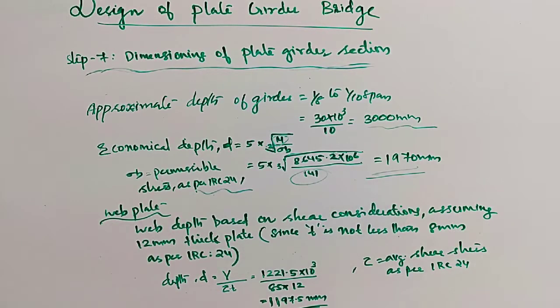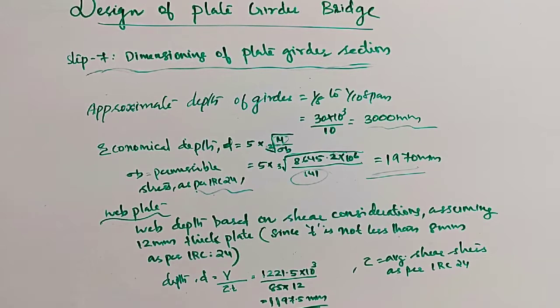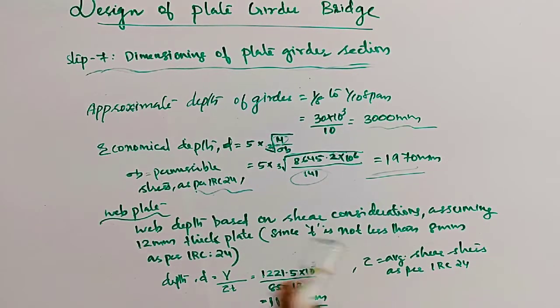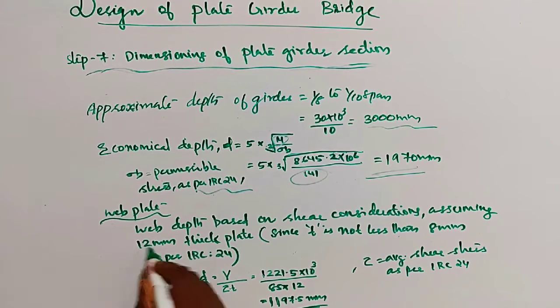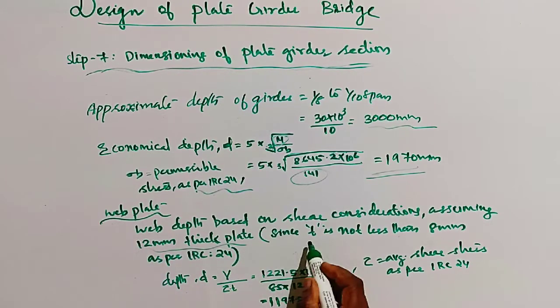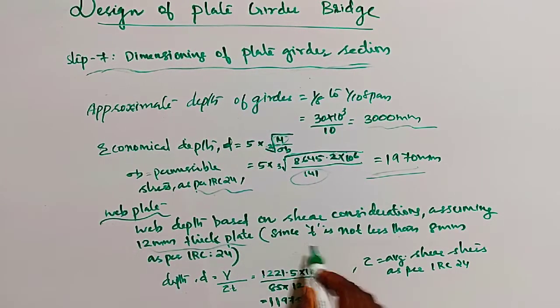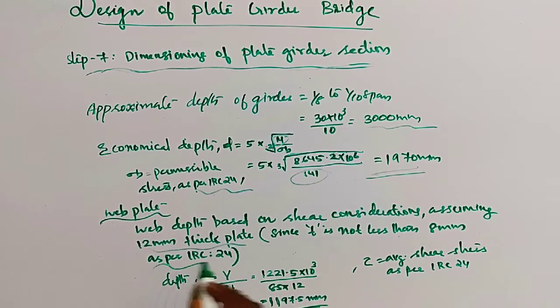Then the answer is 1970 mm. Next, the web plate. Based on shear consideration, assume the web plate thickness is 12 mm.